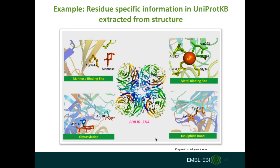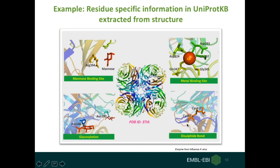We do import residue-specific information from structures. For example, this is a protein from influenza virus and there are important features captured in the structure. Specific amino acids are involved in specific functions: arginine at position 394 is binding to mannose molecules; certain amino acids are binding to calcium; asparagine at position 146 is glycosylated; and two cysteine residues at positions 92 and 417 are involved in forming a disulfide bond.